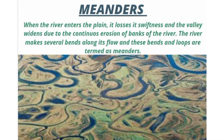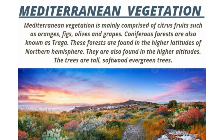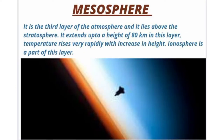Mediterranean vegetation. Mediterranean vegetation is mainly comprised of citrus fruits such as oranges, figs, olives and grapes. Mesosphere. The mesosphere is the third layer of atmosphere and it lies above the stratosphere. It extends up to a height of 80 kilometers. In this layer, temperature rises very rapidly with increase in height.